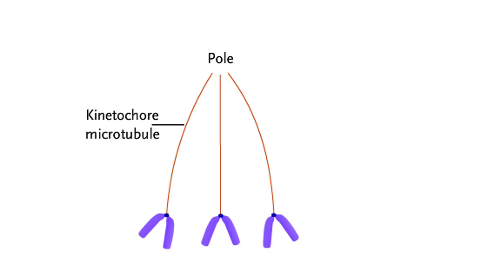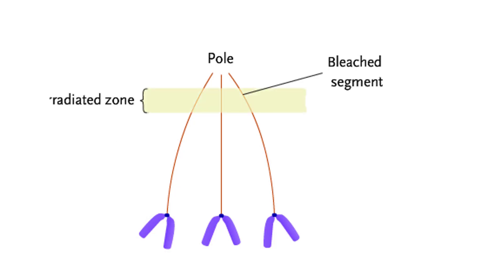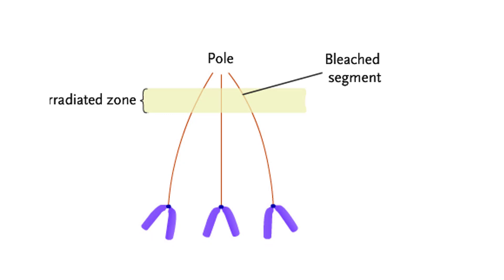The following experiment shows that the kinetochore microtubules are shortened by disassembly rather than by contraction or movement toward the pole. Researchers used a microscopic beam of ultraviolet light to bleach a section of the microtubules. As the chromosomes move toward the pole, the bleached segment did not move.